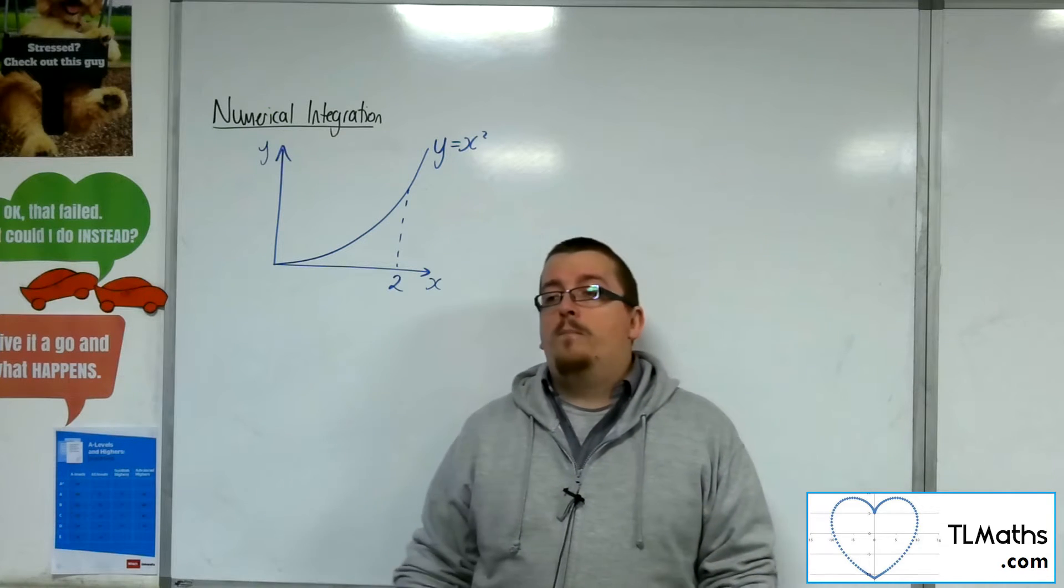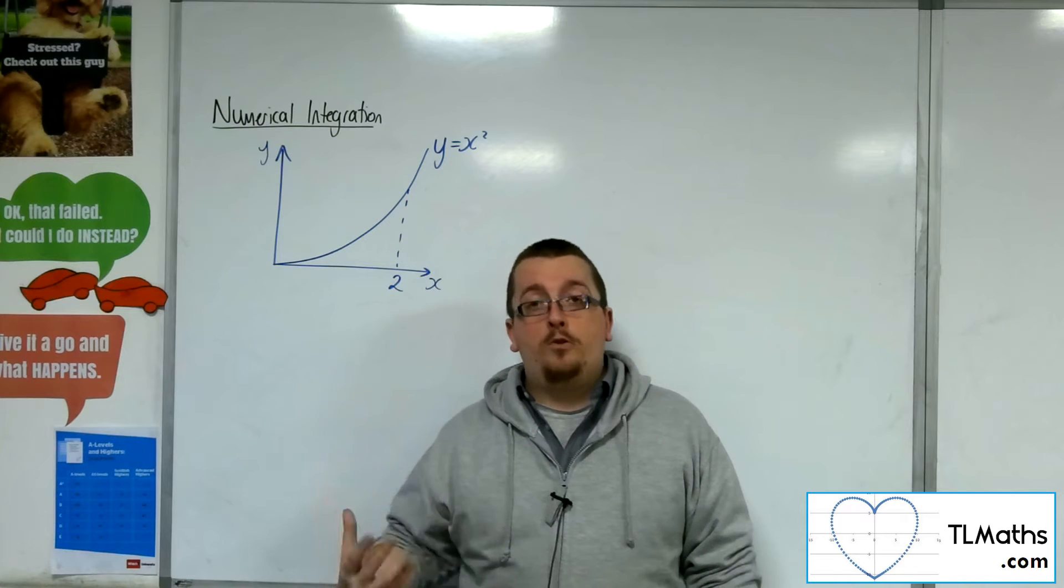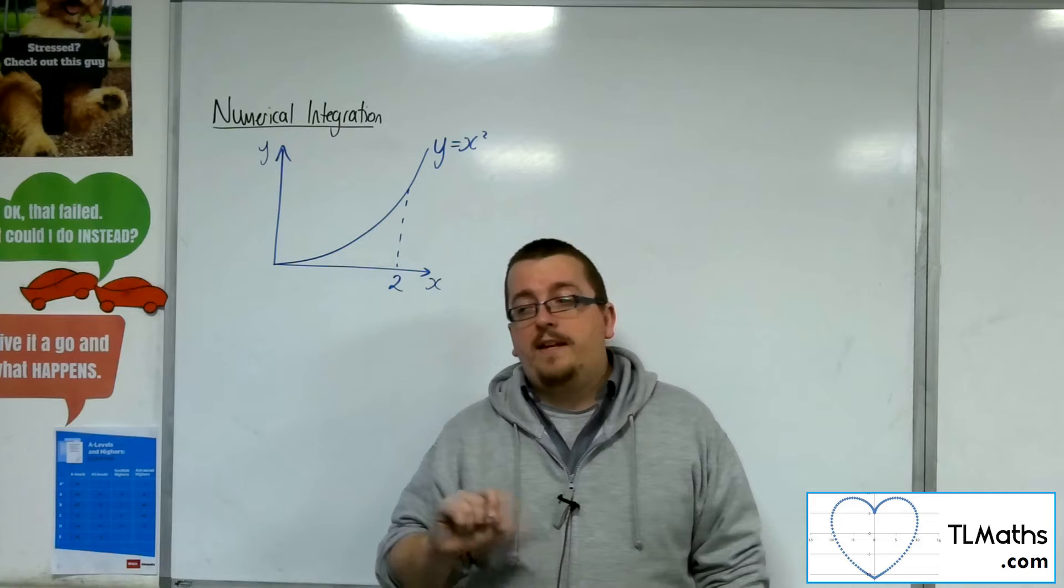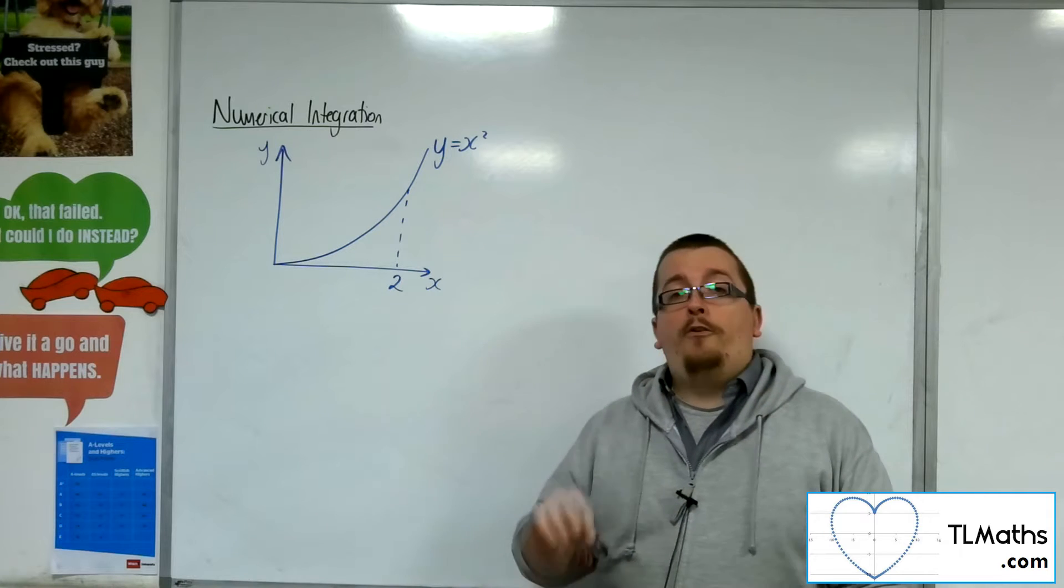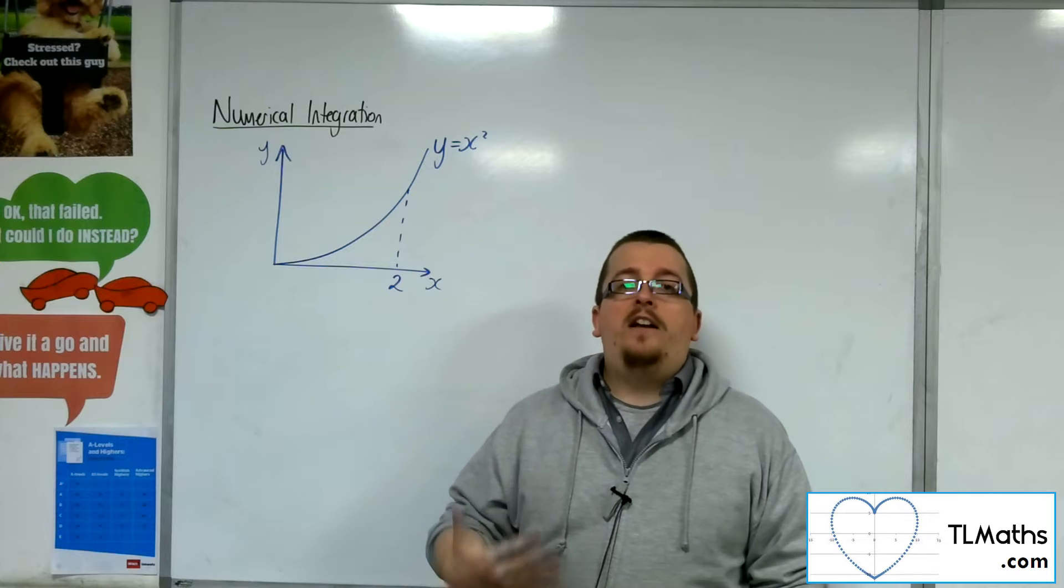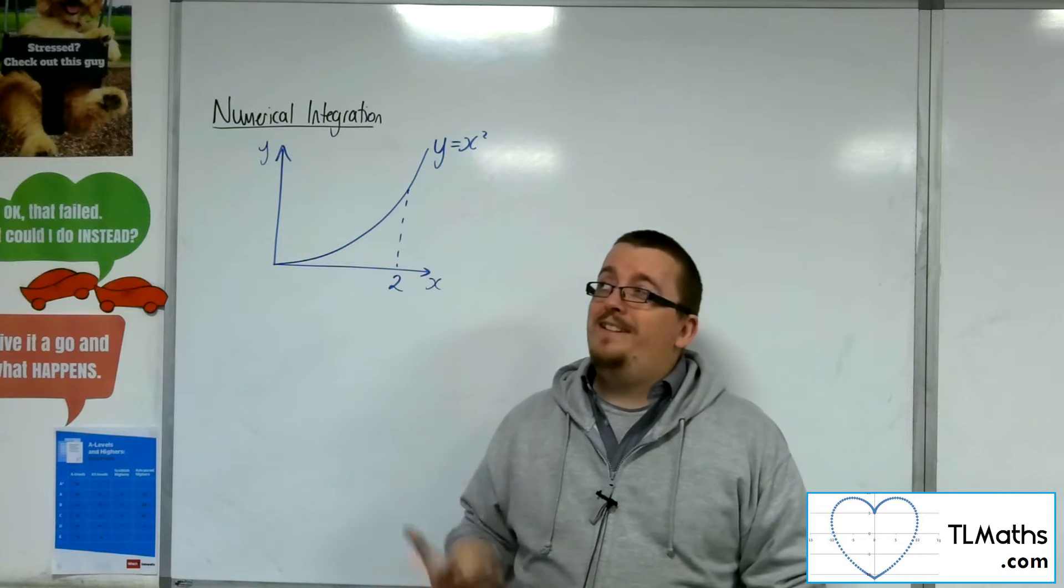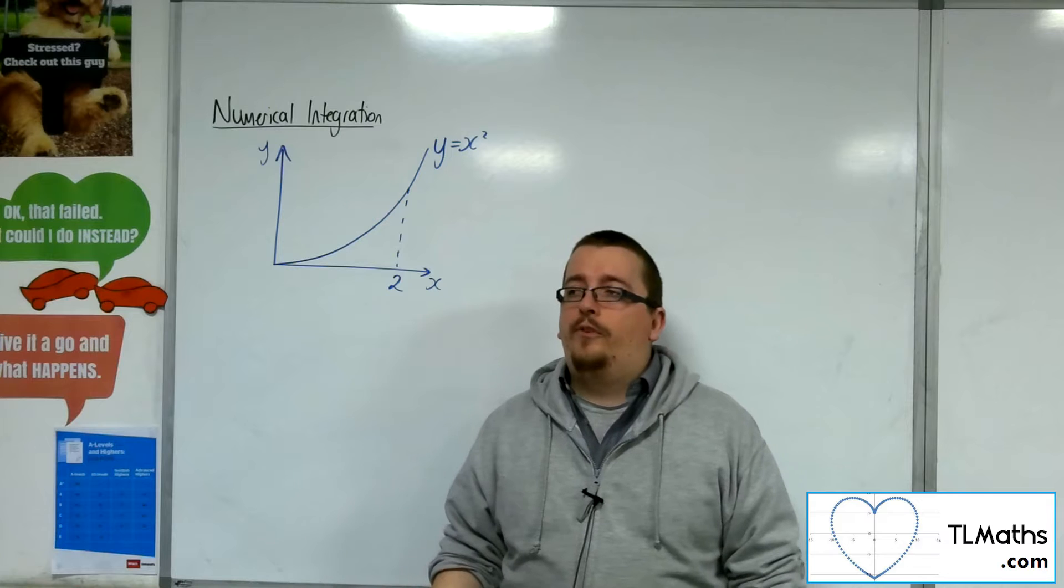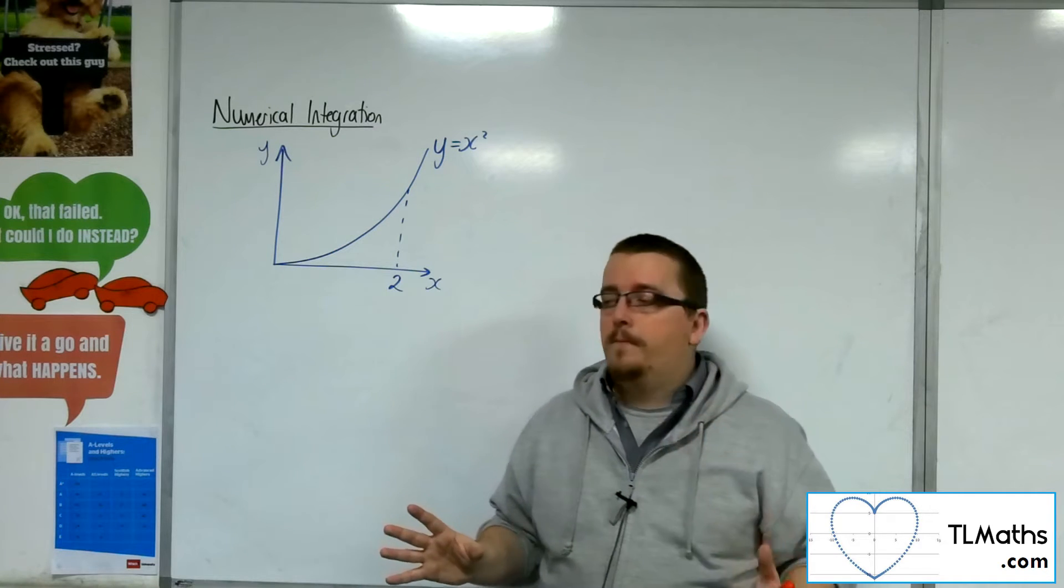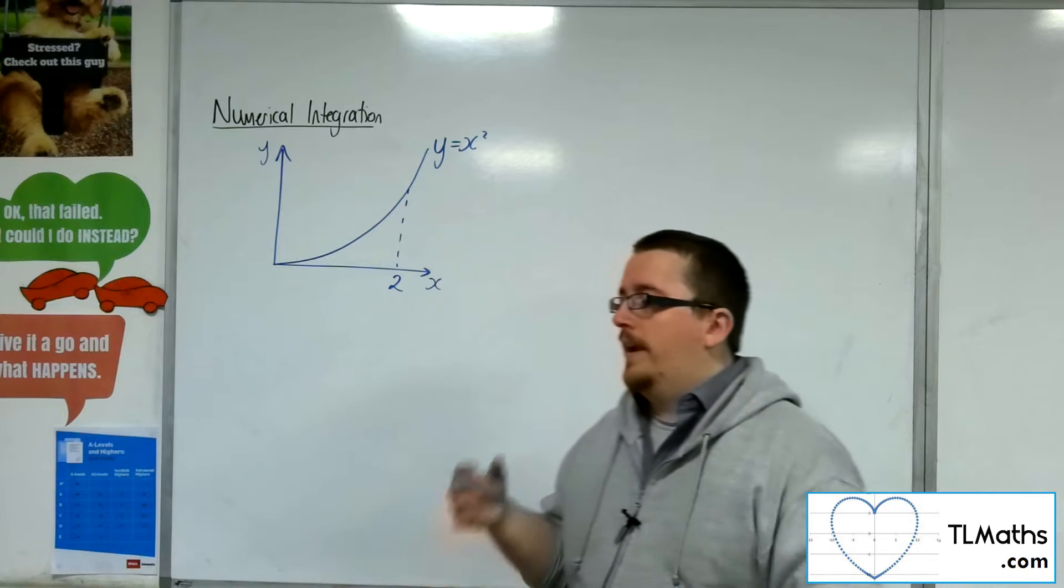There's also another method using rectangles known as the mid-ordinate rule, which uses the midpoints of rectangles. There's also Simpson's rule, which uses quadratics to estimate a curve and has a slightly more challenging formula than the trapezium rule, but it's not too much more complicated.